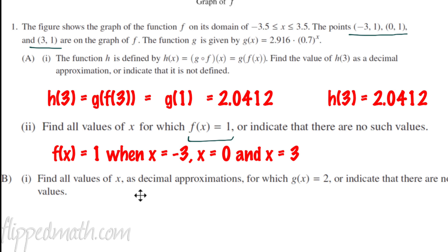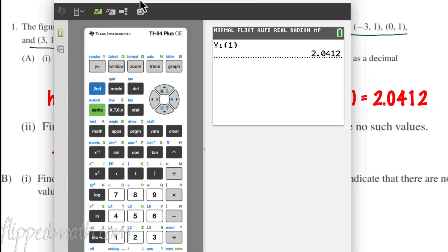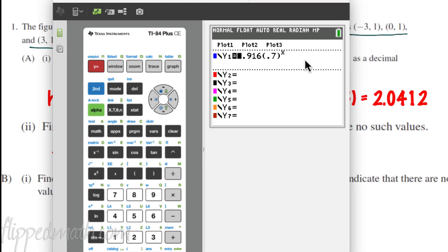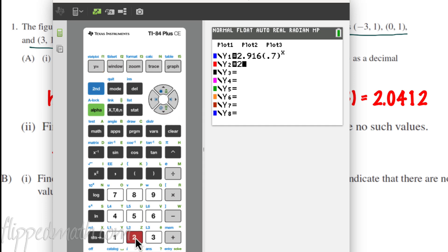Part B. Find all the values of x as decimal approximations for which g of x equals 2. Or indicate that there are no such values. Well, let's get the calculator back over here. We already have the function in y1, right? So you double check it. Yep. And we want to know when it equals 2. So to do that, I plug a 2 in.